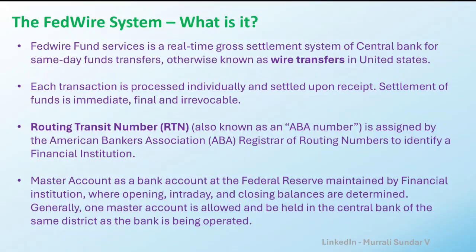Since Fedwire itself is the RTGS system of the central bank, each bank has a master account opened at their respective district Federal Reserve Bank. Usually every country has only one central bank, whereas in the US there are 12 central banks. Each bank is allowed to have only one master account, with exceptions for cases like mergers and acquisitions, but ideally each bank should have only one master account for settlement purposes.